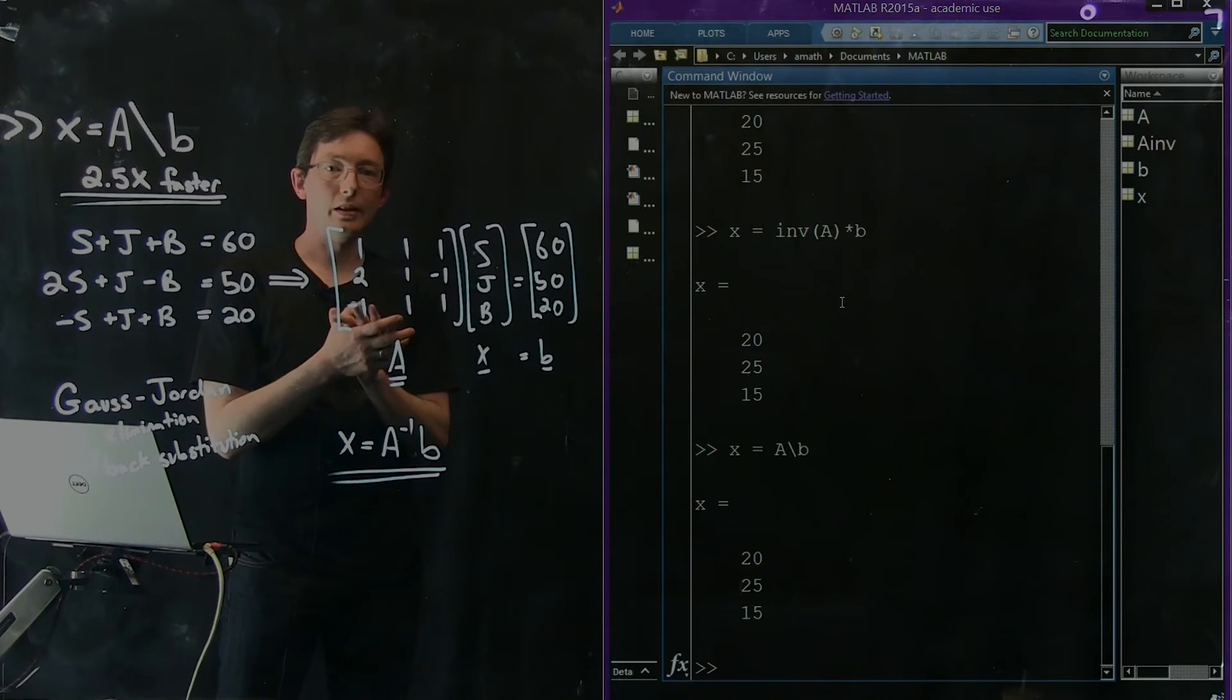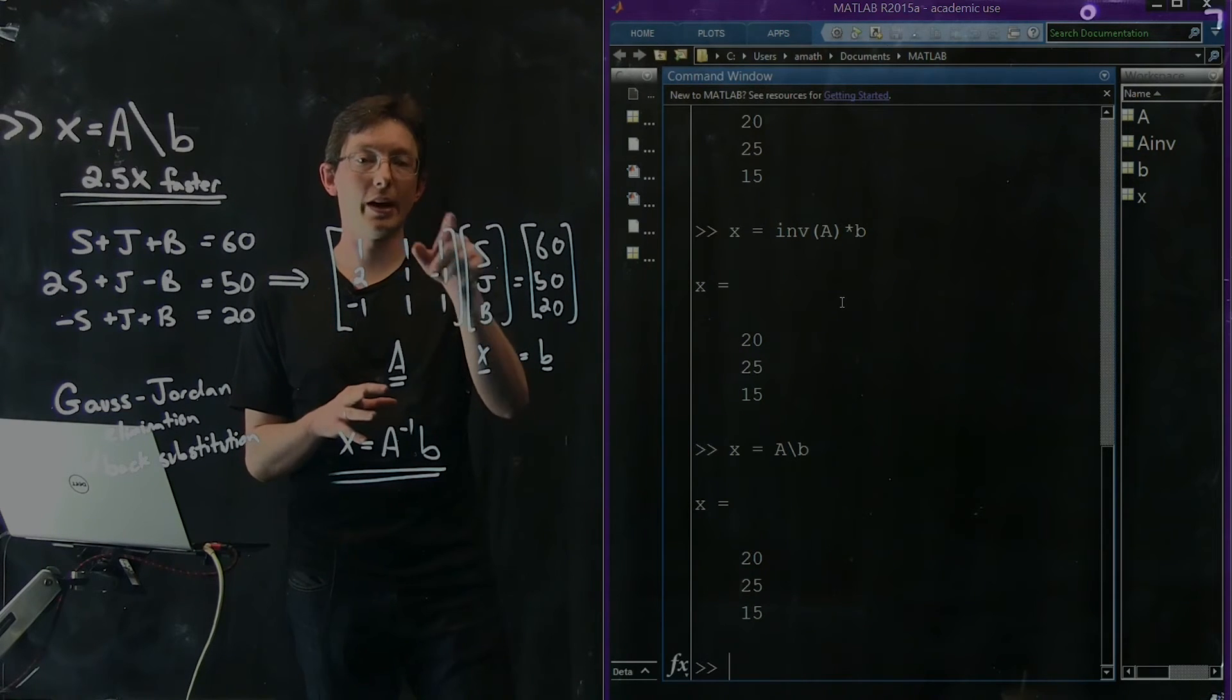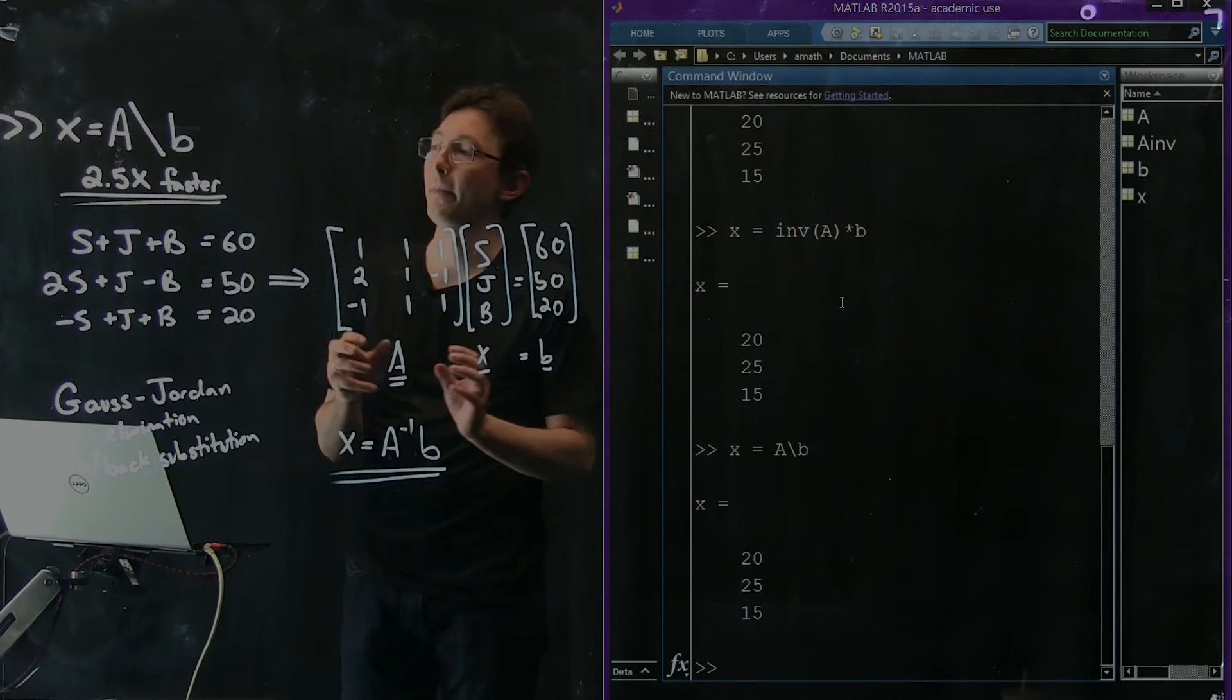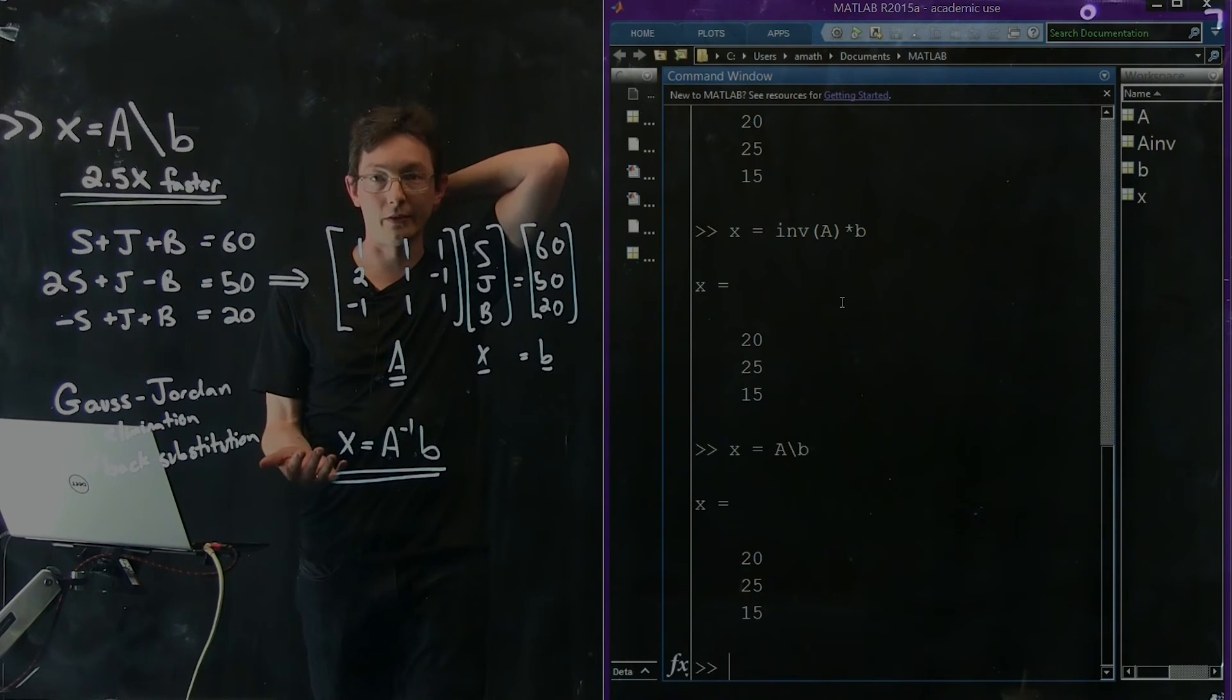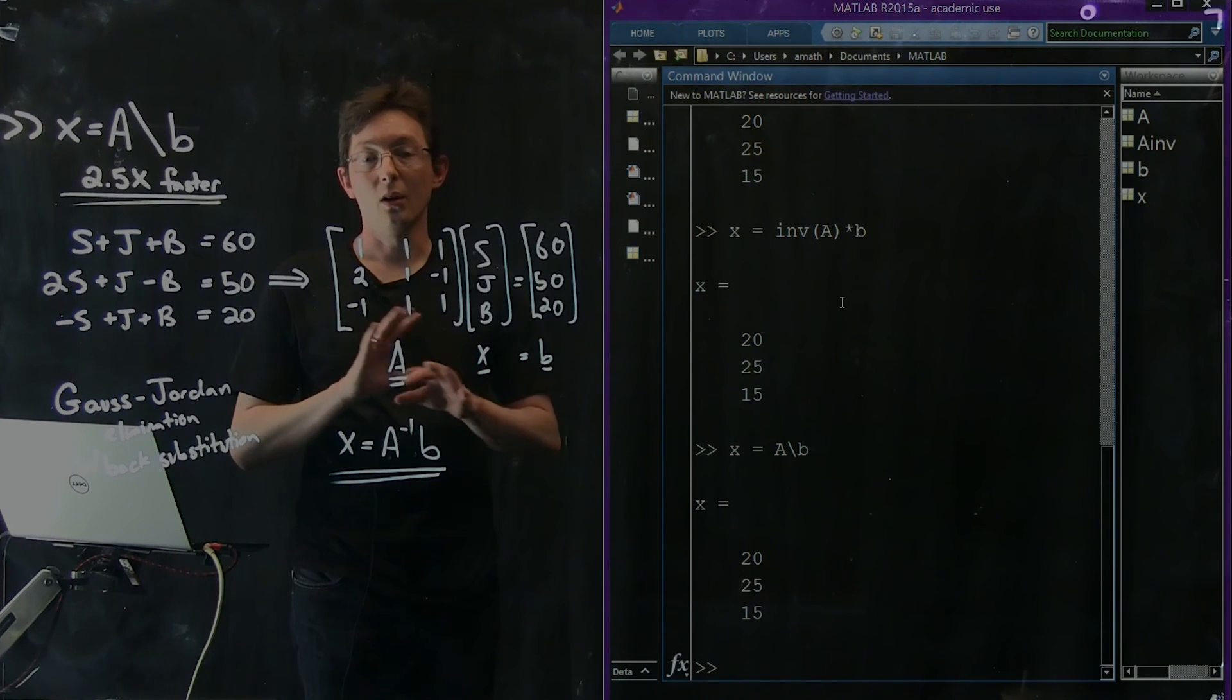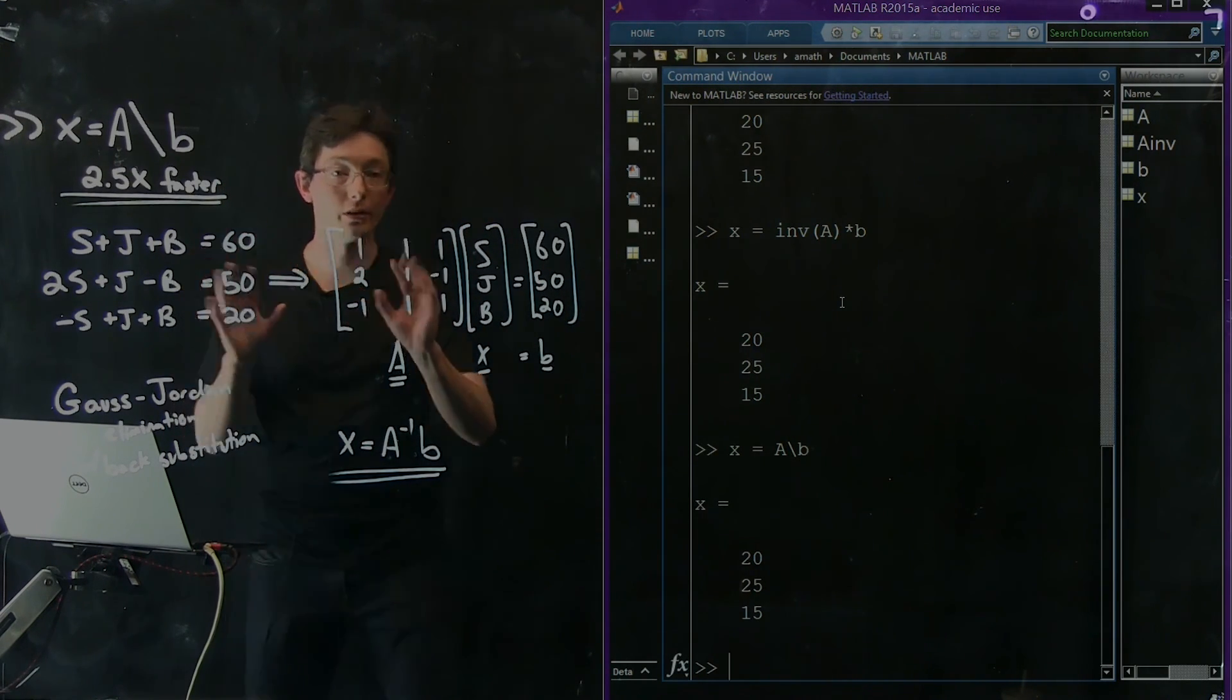That's how you do matrix inverses in MATLAB. What we're going to see next time is what happens when the A matrix won't be invertible. Sometimes there won't be a matrix A inverse that when you multiply it by A gets the identity. In those cases, we say the system is degenerate or singular, which means there's no good solution to this system. We'll have to figure out ways around that - that's what we're going to look at next time.